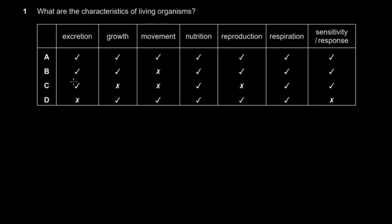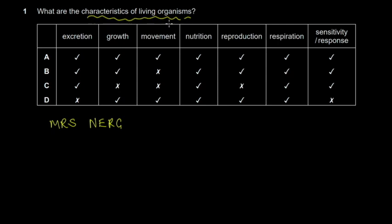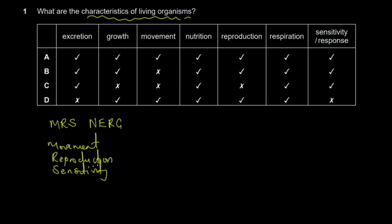Question one asks: what are the characteristics of living things? There's a mnemonic phrase called MRS NEG. A mnemonic is simply a phrase you remember so that you can recall a lot of information. For example, to remember the characteristics of living organisms, just remember MRS NEG — M stands for movement, R for reproduction.